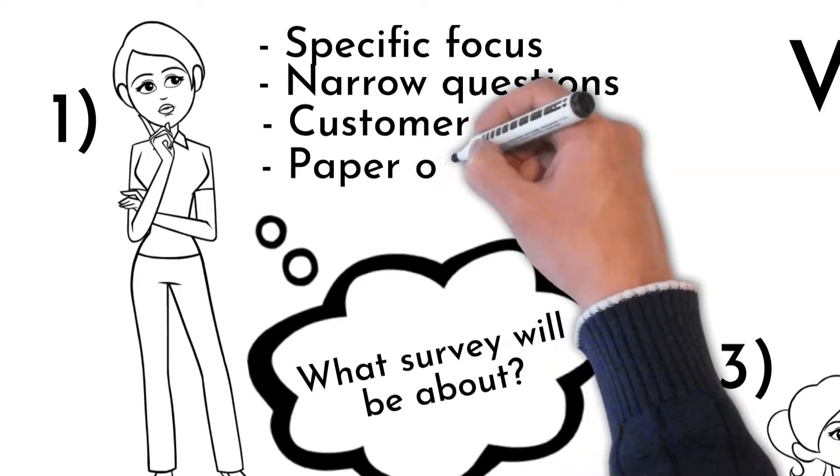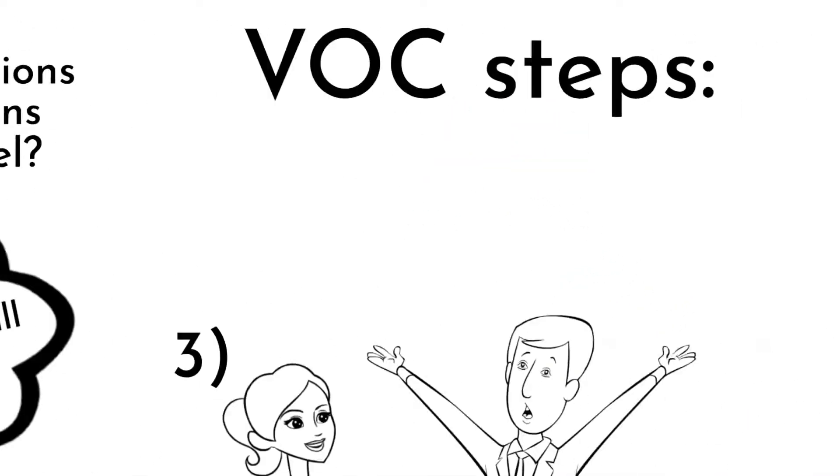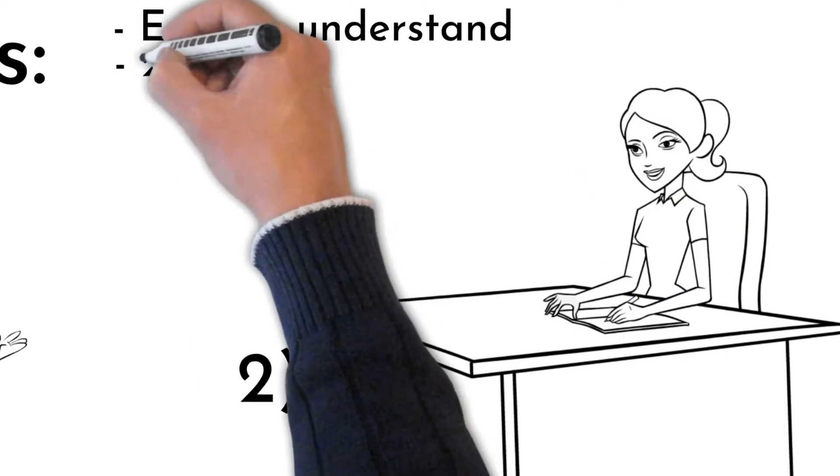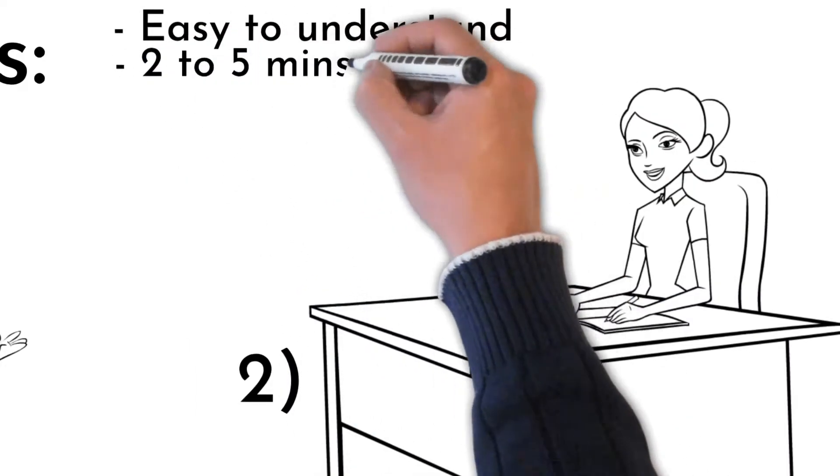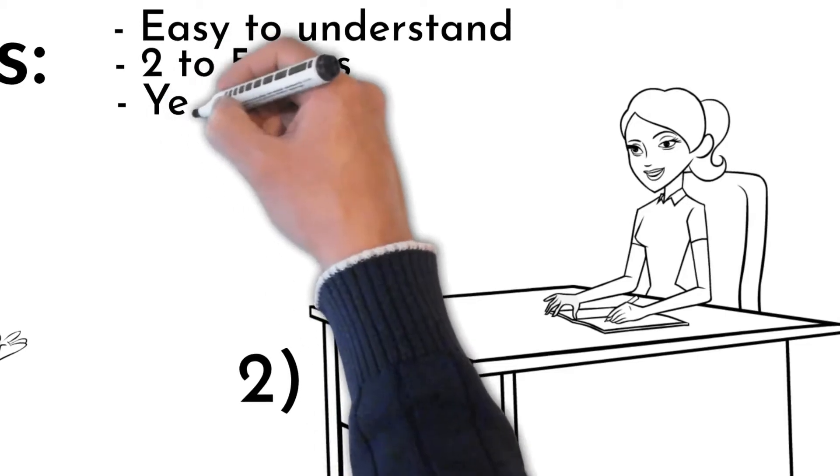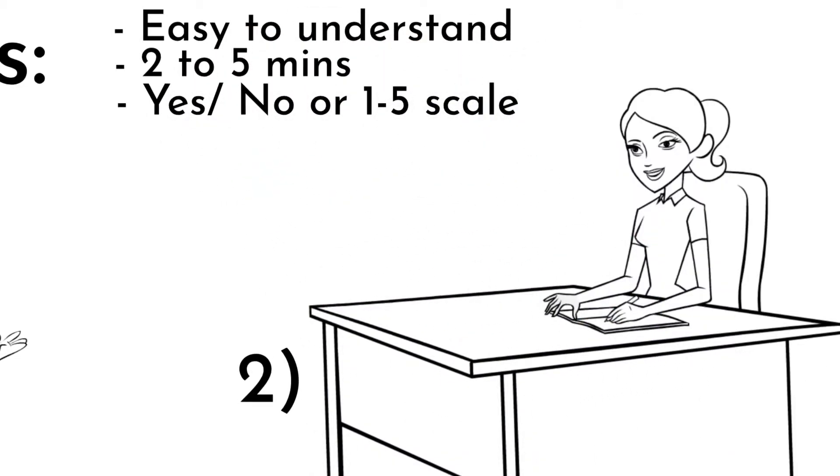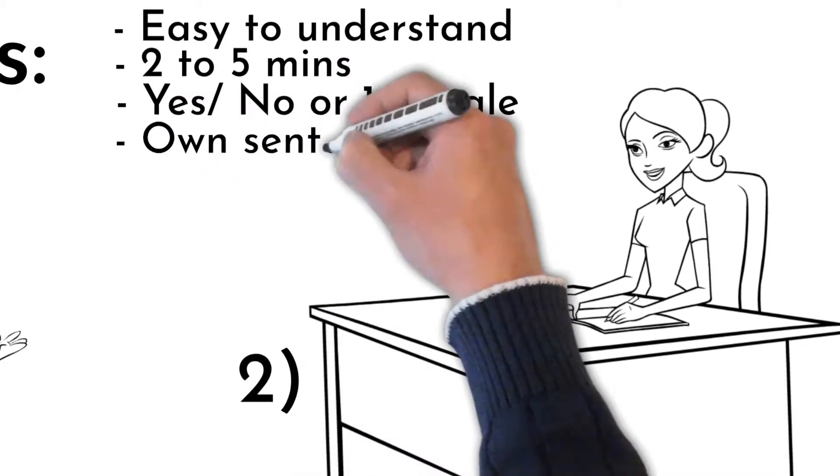Decide to use paper, electronic, or verbal survey. Create an easy survey, quickly fillable, that person will not spend more than two, maximum five minutes filling. Use two type questions: yes or no questions, or one to five scale is the first type. Second type is to let customers use their own words.